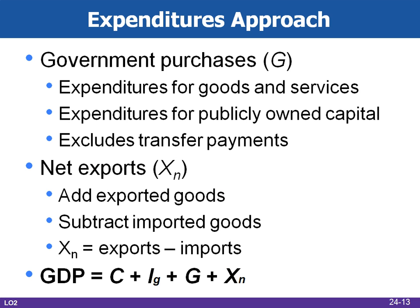The last two components of the expenditures approach are government purchases and net exports. Government purchases are officially labeled government consumption expenditures and gross investment. It includes expenditures for goods and services that the government uses in providing public services, and expenditures for publicly owned capital such as schools and roads. It excludes government transfer payments such as Social Security, because those merely transfer receipts to certain households without generating production.